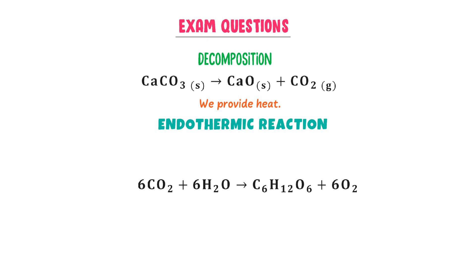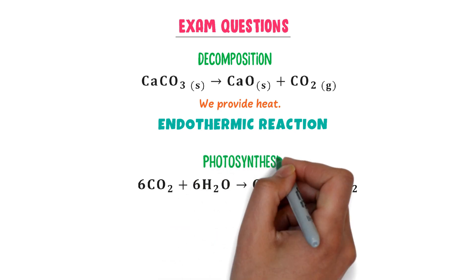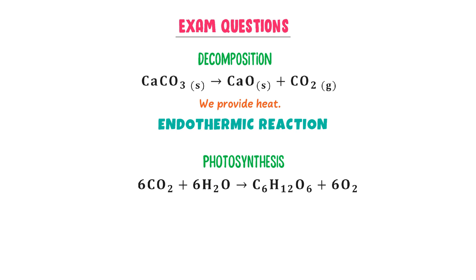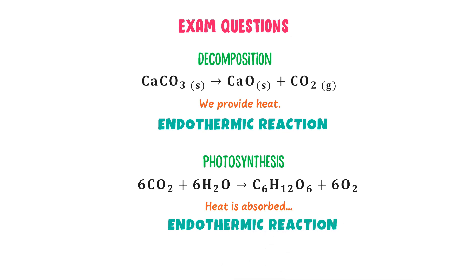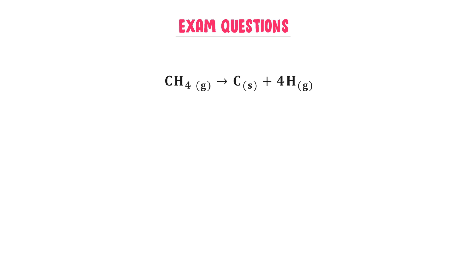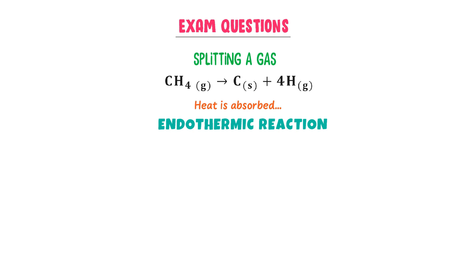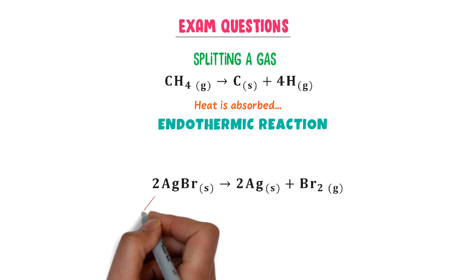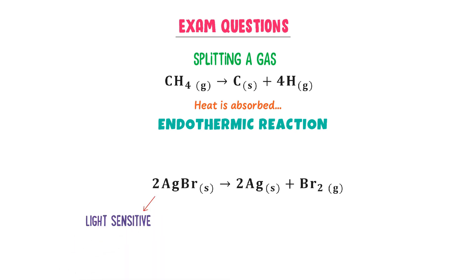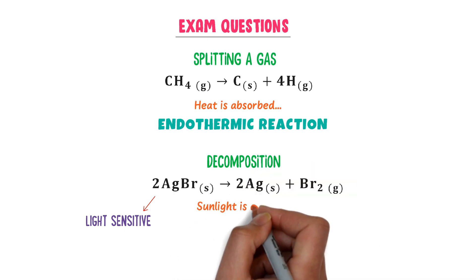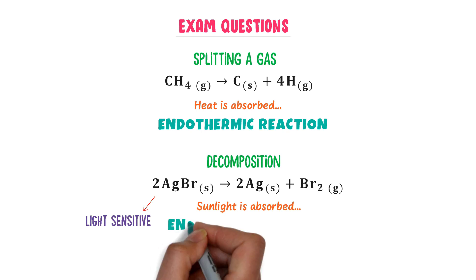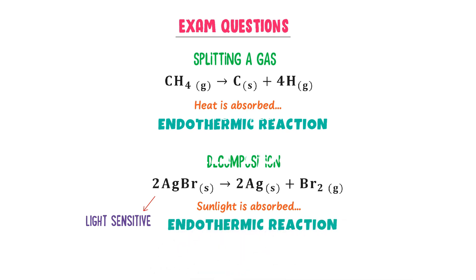Fourth, consider the photosynthesis reaction — in photosynthesis, sunlight is absorbed to form glucose, so heat energy is absorbed from the surrounding, making it an endothermic reaction. Fifth, methane gas is split into carbon plus hydrogen; since splitting a gas molecule is endothermic, this is an endothermic reaction. Sixth, silver bromide is light-sensitive — when it absorbs sunlight, it decomposes into silver plus bromine gas, absorbing heat energy from the surrounding, so it is an endothermic reaction. Note down all these important reactions.